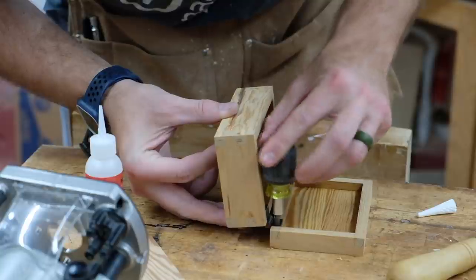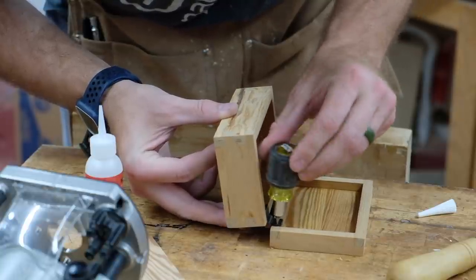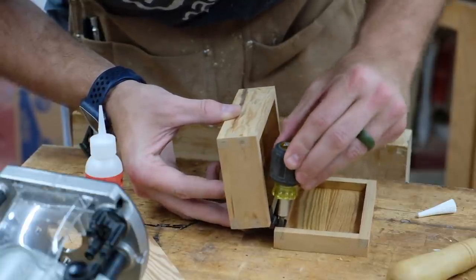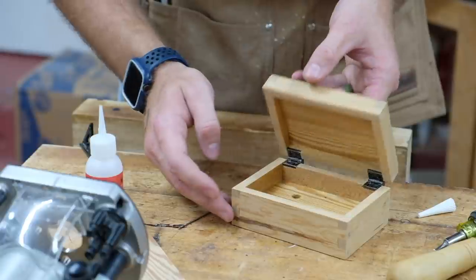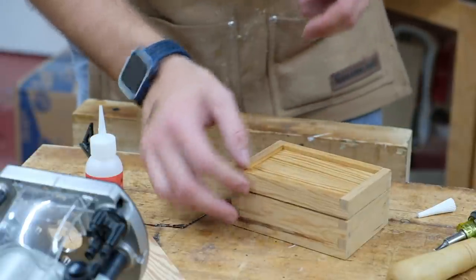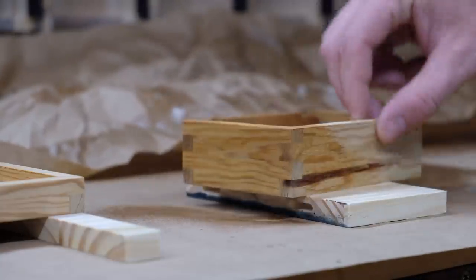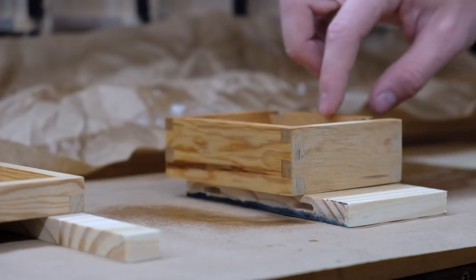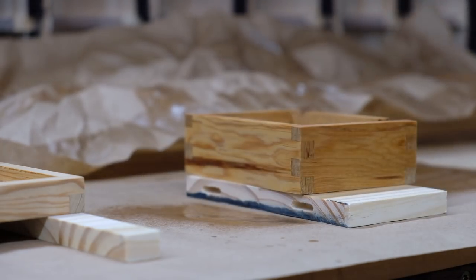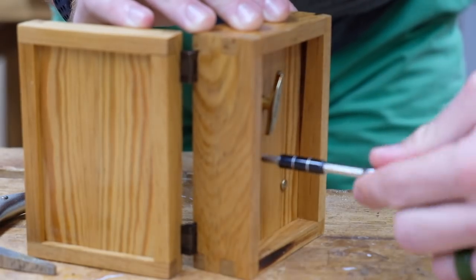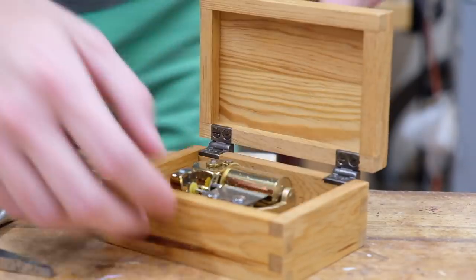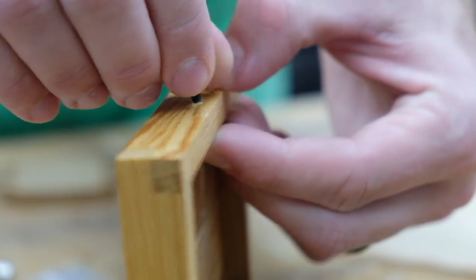You'll see here that the lid doesn't close fully, which usually means the hinge mortises are too deep, and I thought that was the case as well, but it turned out a few of the screw heads were poking out and preventing the lid from closing. The last steps were to screw in the mechanism and the little knob, and then it was time to test it out.